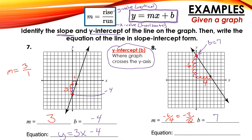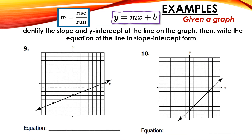Now b is where this graph crosses the y-axis. Counting from the x-axis: 1, 2, 3, 4, 5, 6, 7 — so my b is 7. Plugging in that information: y equals negative 3 over 2 x plus 7. I have two more examples I'm going to do with you before you try the last four on your own.